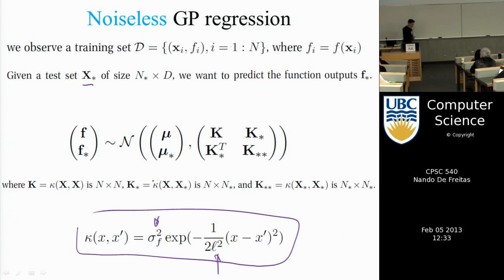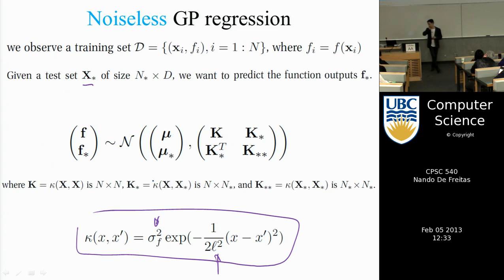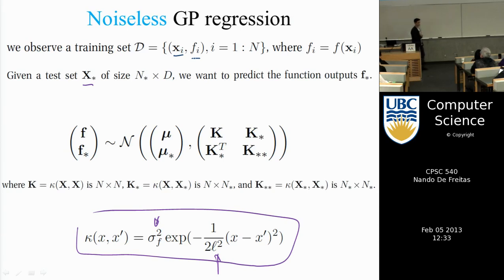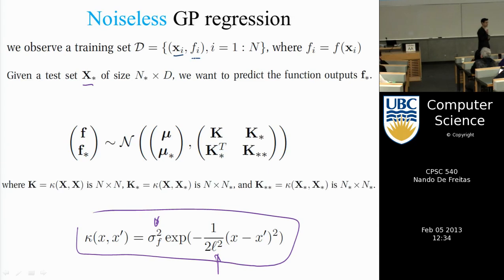We started going over Gaussian processes when there is no noise. To recap, our dataset consisted of points and evaluations of a function. This function — importantly — only needs to be evaluated. I do not need a mathematical expression for that function.